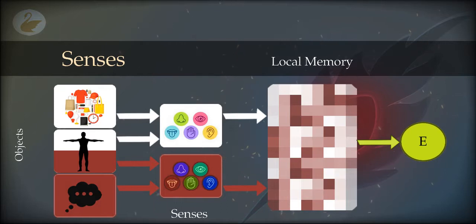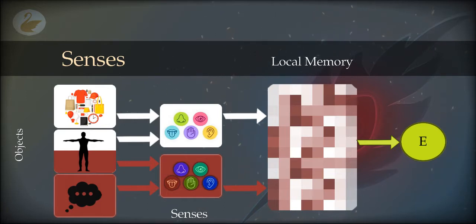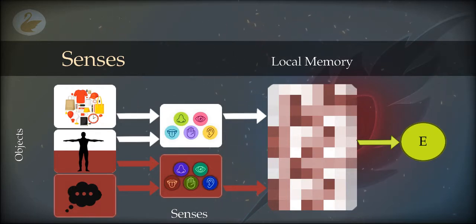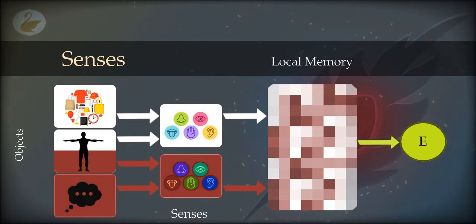This drawing suggests that the memory is separate from the senses, and the senses are separate from the objects. The objects are in existence as they are seen — a shirt looks like a shirt, a clock looks like a clock, a shopping bag looks like a shopping bag. Thoughts are exactly that, in the form they are perceived. This is a very simplistic view of what we actually experience.